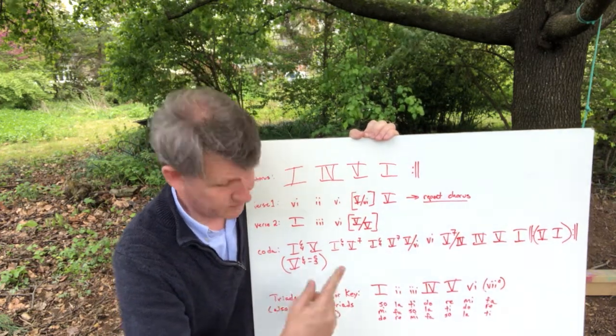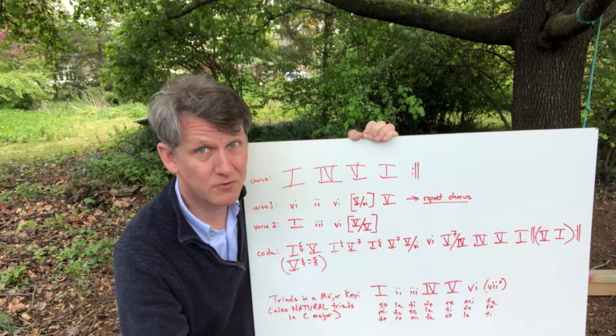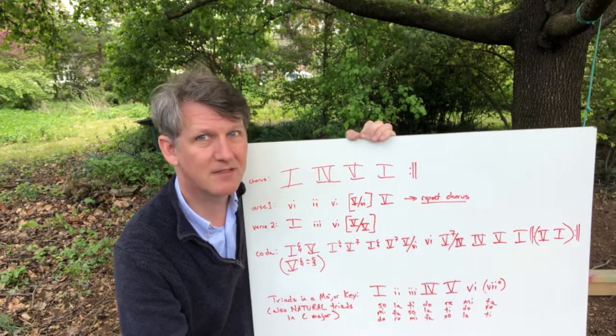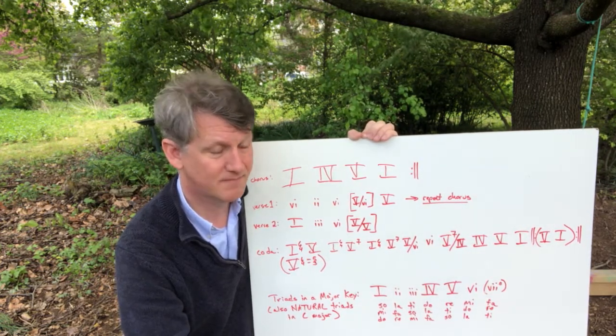Okay, so if you can identify the notes of the triad, you find those roots, those are the qualities that you expect unless there are accidentals.